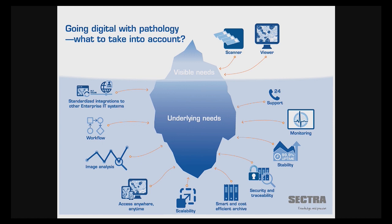When you look at digital pathology, it's easy to just see the visible needs — digital images — and that is of course true. But there are a lot of things below the surface that are key to having something that works for daily work. It needs to be stable. You need to be able to access images from wherever you are, at any time, on whatever platform. You need a proper support solution — if you're working from home and the system goes down, you cannot work. It needs to be up all the time. You need to reach support to help you if something happens, and you need to have a proper workflow.